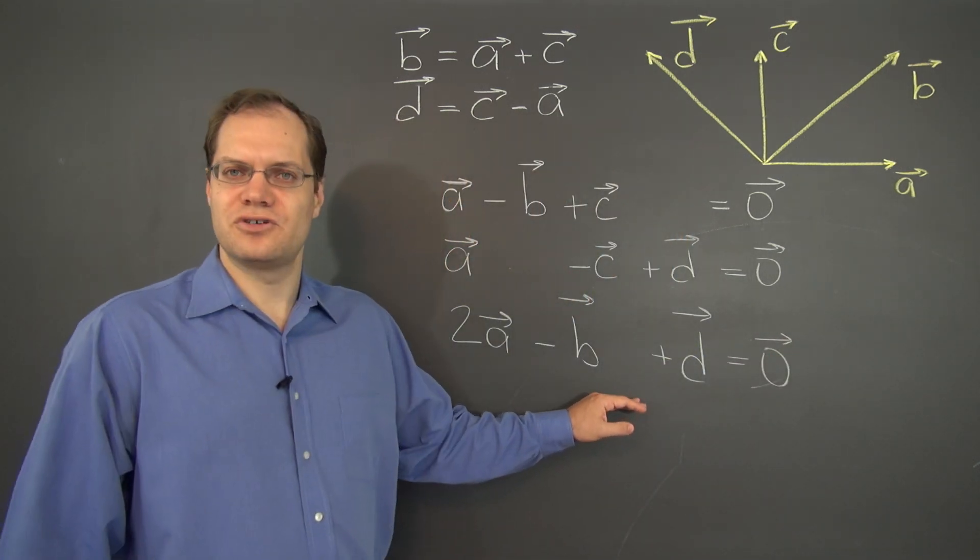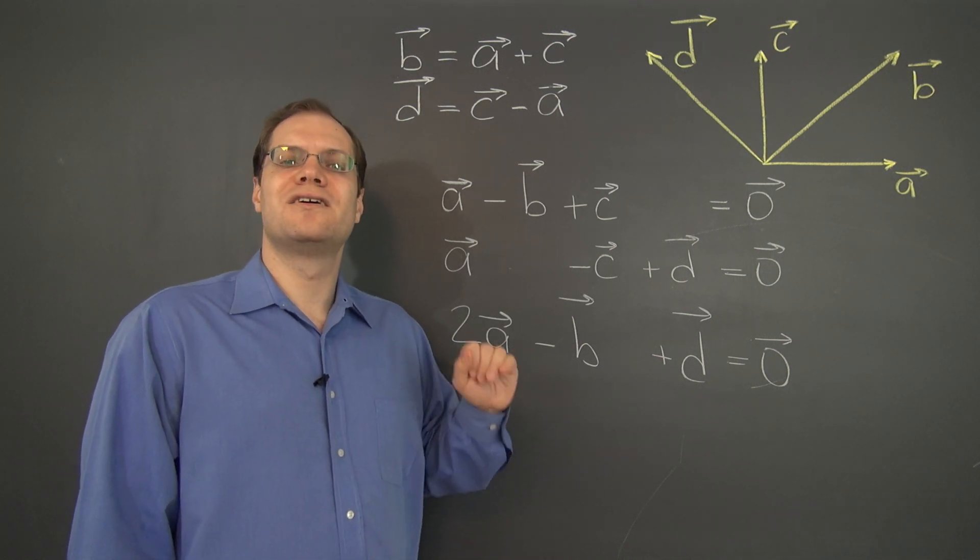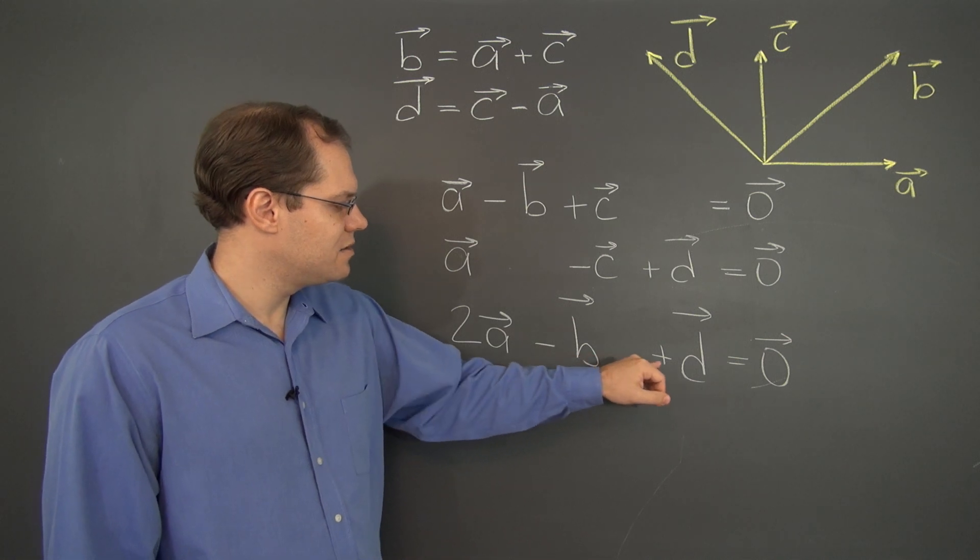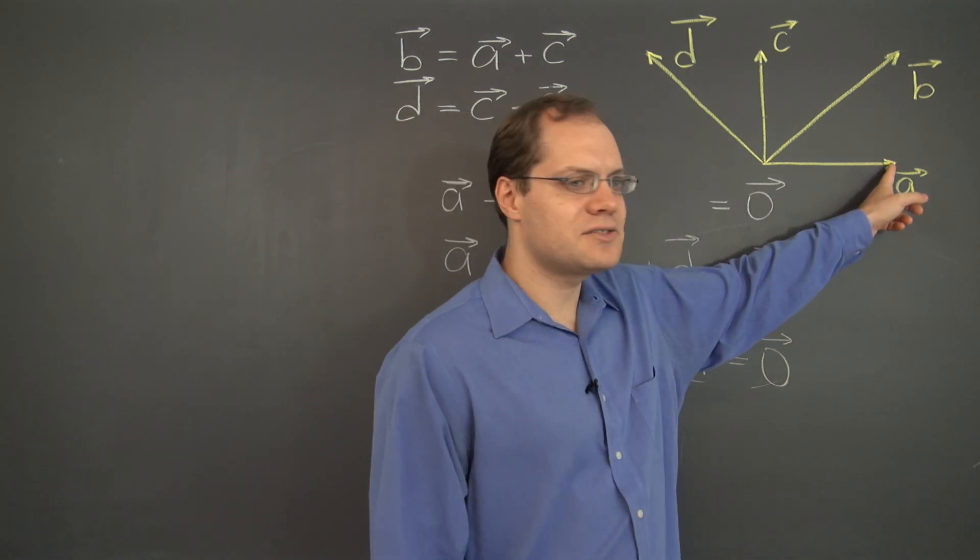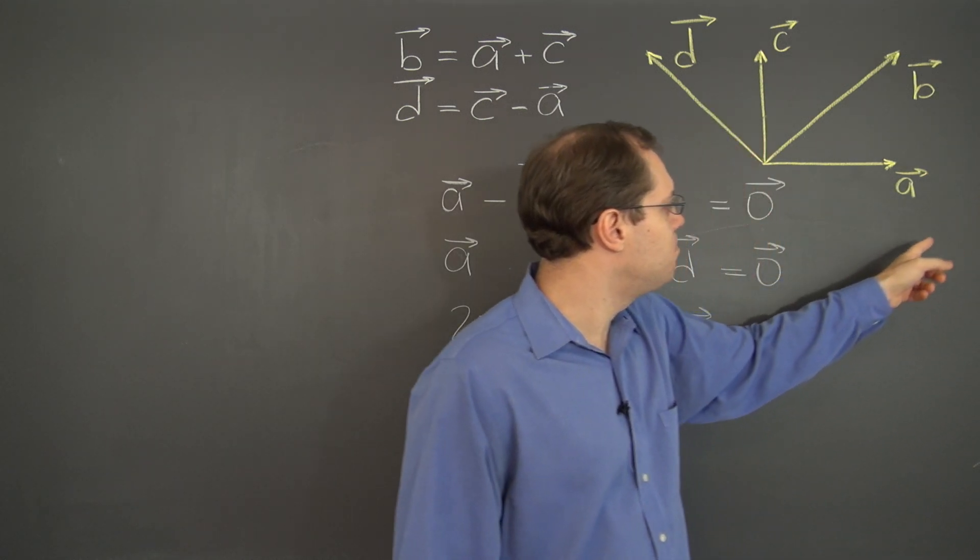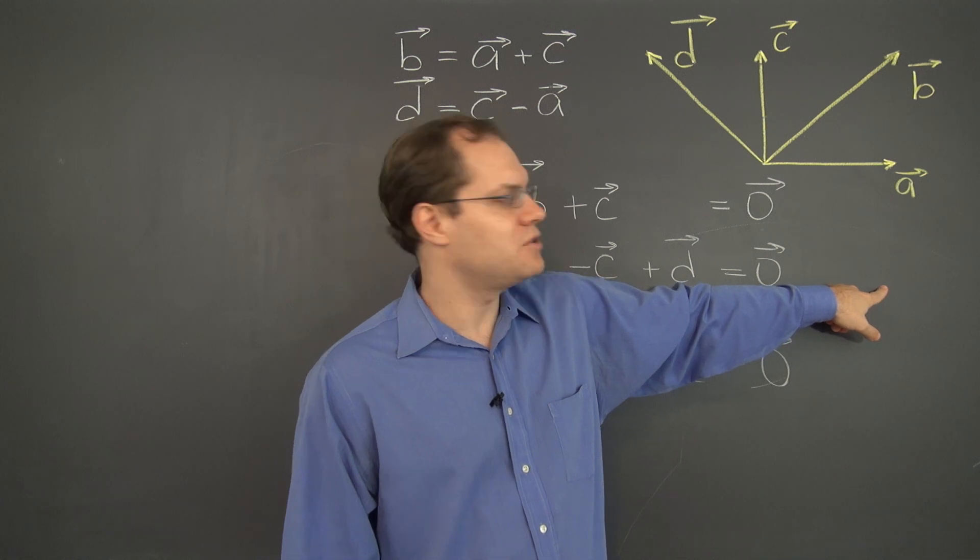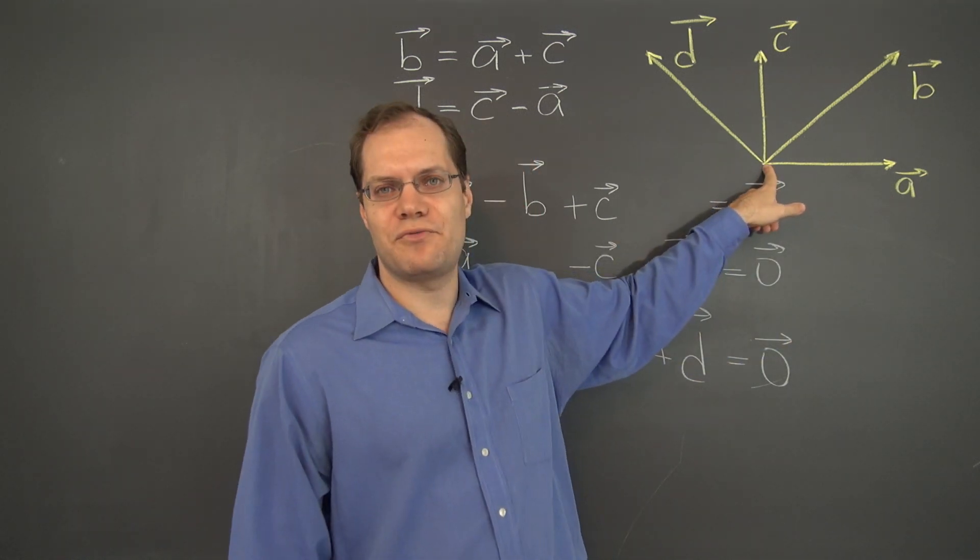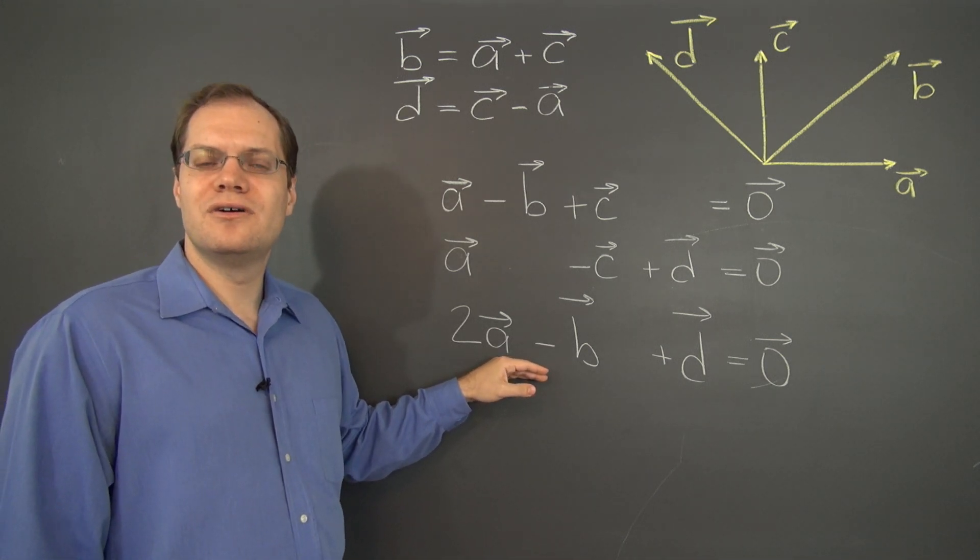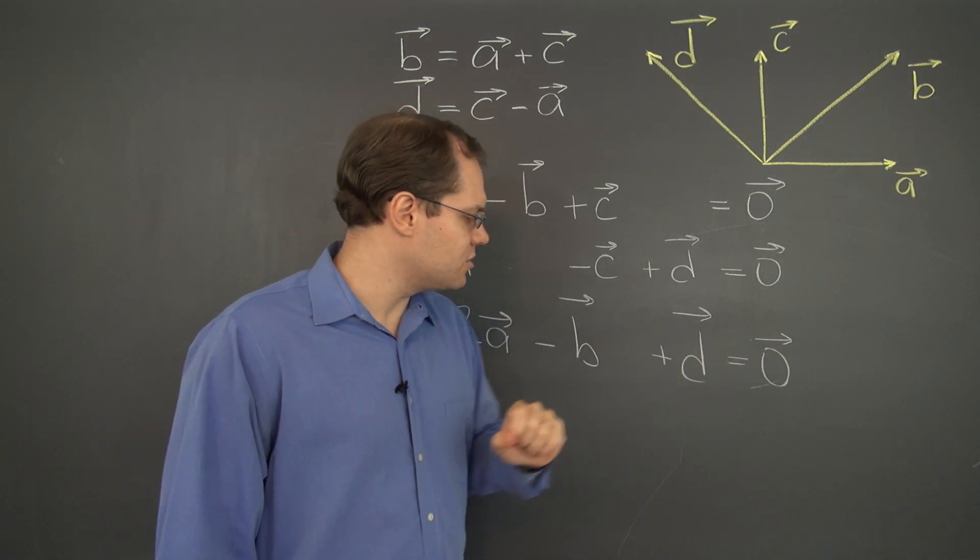Now, of course, it's true because we derive this algebraically, but let's just confirm that it makes sense geometrically. 2a minus b, plus d. a is right here. 2a goes beyond the shot, but when you subtract b from that point, you end up right here. And of course, when you do plus d, sure enough, we arrived at zero. So, we're here, we have a brand new linear combination that was not so easy to see geometrically that gives zero.